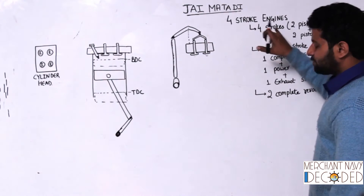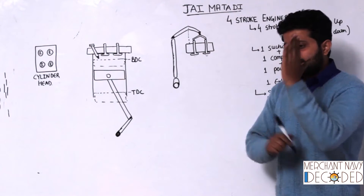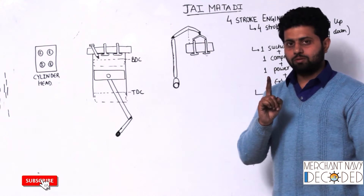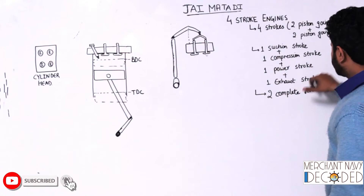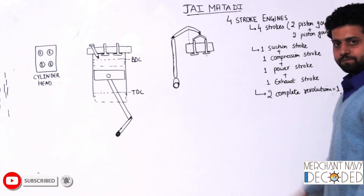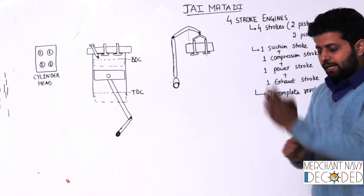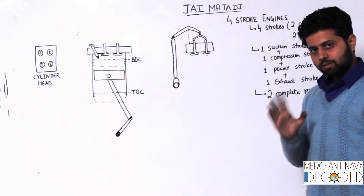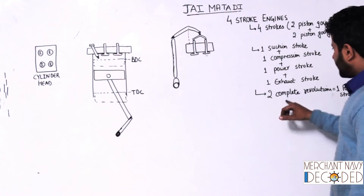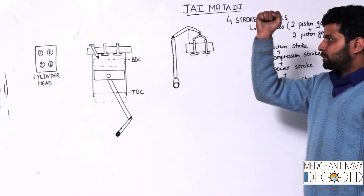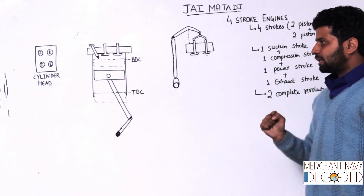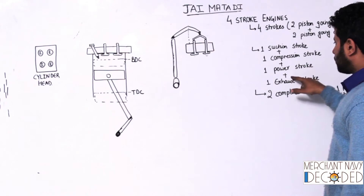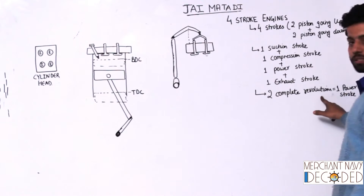What I mean by four-stroke engine is: every four strokes, there is going to be one power stroke. Amongst these four strokes, there is one power stroke. Like in two-stroke engines, every two strokes there has to be one power stroke. When the piston goes up and comes down, that is one revolution. So one power stroke takes place in two revolutions.